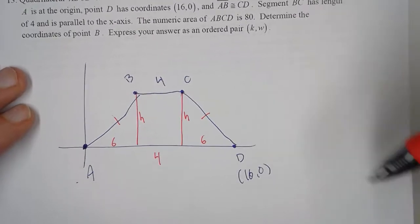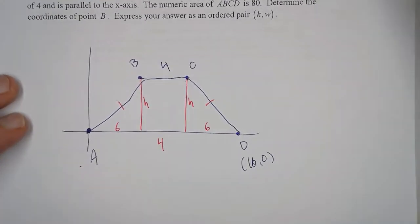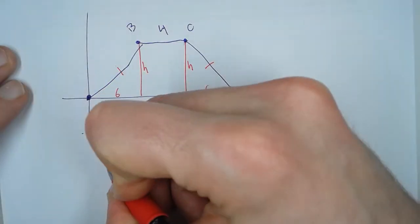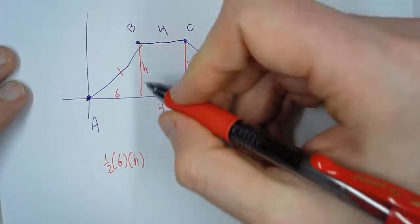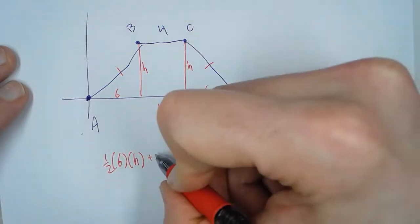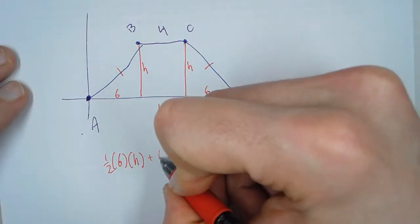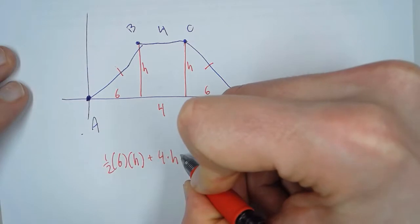All right, so how would I find the area of this? Well, this is a triangle, so I take 1/2 the base, which is 6, times the height, which is H. Here, this is a rectangle, so I'd multiply the base, which is 4, times the height, which is H.